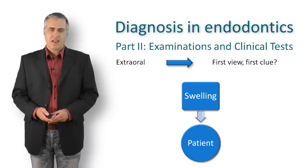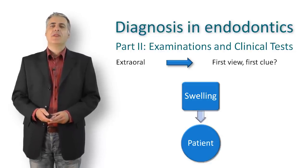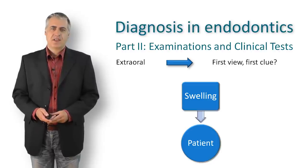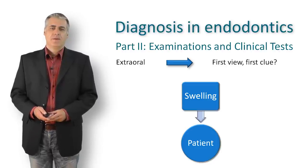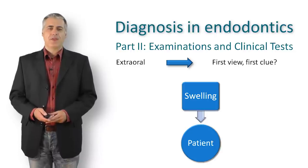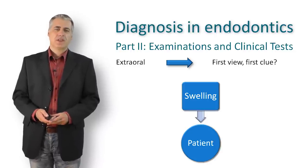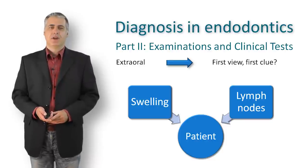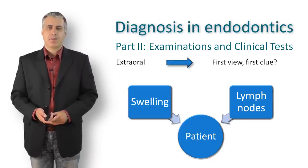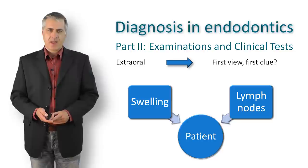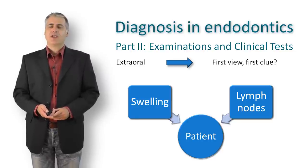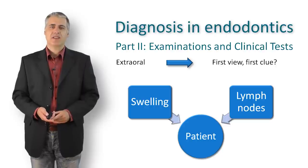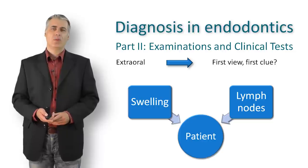Is the swelling localized in the front or back portion of the face? Is it unilateral or bilateral? This is followed by palpation to determine whether the swelling is firm or fluctuant, diffuse or localized. Palpation of the cervical and submandibular lymph nodes gives you information whether an infection is localized or has spread to a generalized process which can affect the whole body.